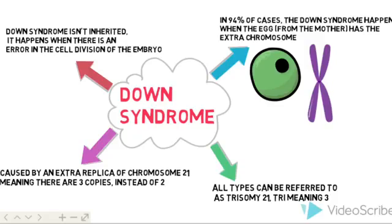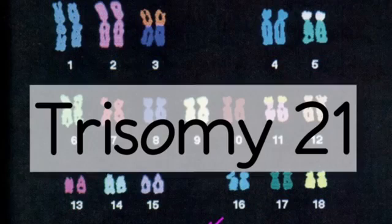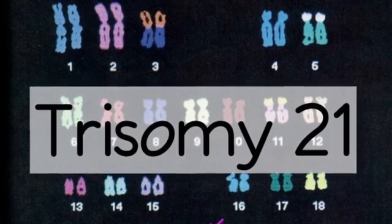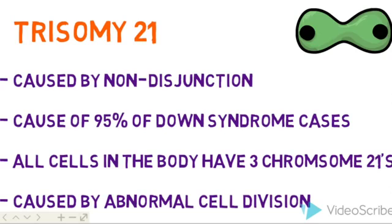Chromosome 21 is always the repeated chromosome in Down's Syndrome. When all the cells in the human body have three copies of chromosome 21 instead of two, it is caused by abnormal cell division in the egg or sperm cell.